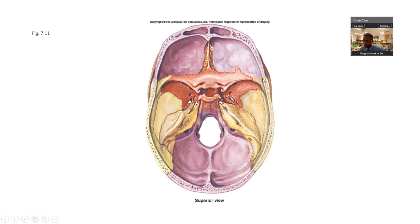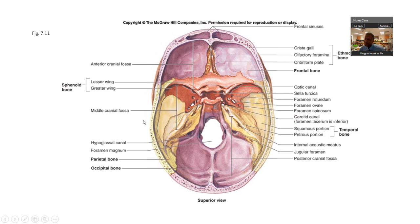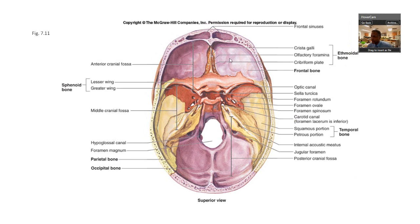You see the temporal bone, sphenoid, parietal — actually I meant frontal — this is the frontal bone over here. The ethmoid bone covers the whole area, but if I'm pointing here, I'm usually pointing to the cribriform plate. There's the frontal bone and sphenoid — you can see all those. I did mention the foramen ovale, which is in the sphenoid bone. And you can see the jugular foramen — notice it's closer to the foramen magnum.